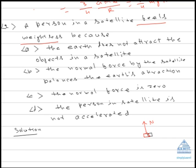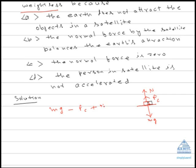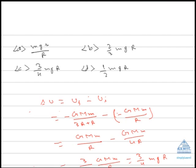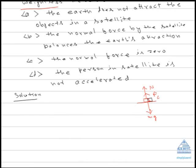The forces acting on this person are: normal reaction N, the weight — that is, the force of attraction by the earth — and the centrifugal force acting on the body. In this case, the net force is mg minus Fc plus N, that is mg minus Fc.